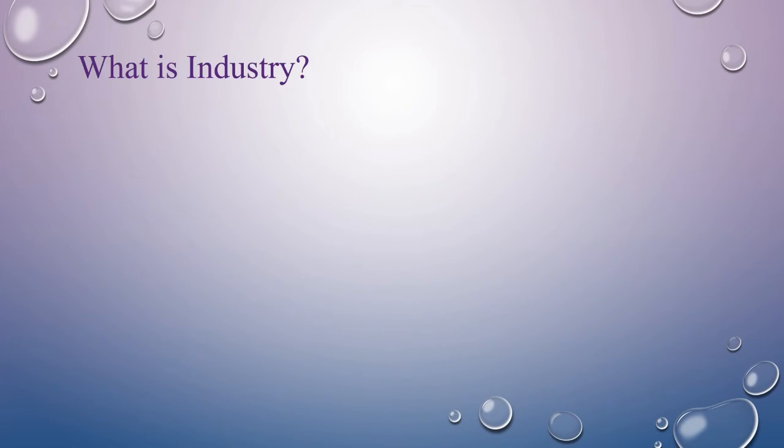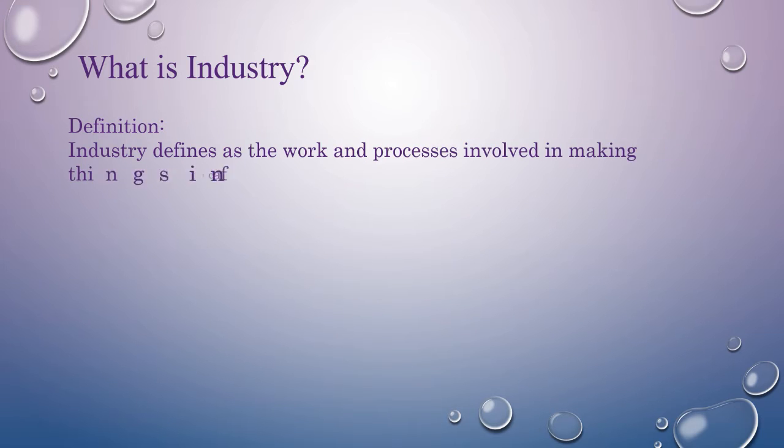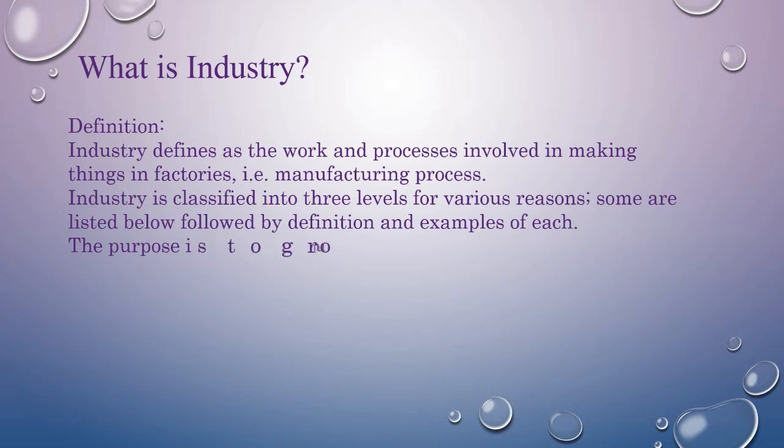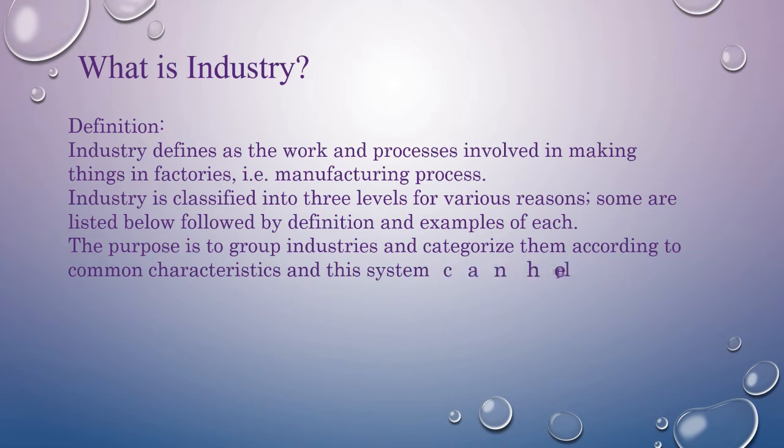What is Industry? According to the definition, industry is the work and processes involved in making things in factories, i.e., manufacturing process. Industry is classified into three levels for various reasons. Some are listed below, followed by definition and examples of each.